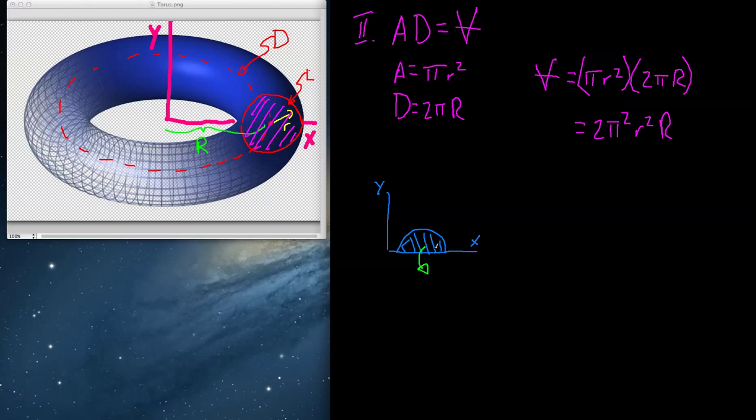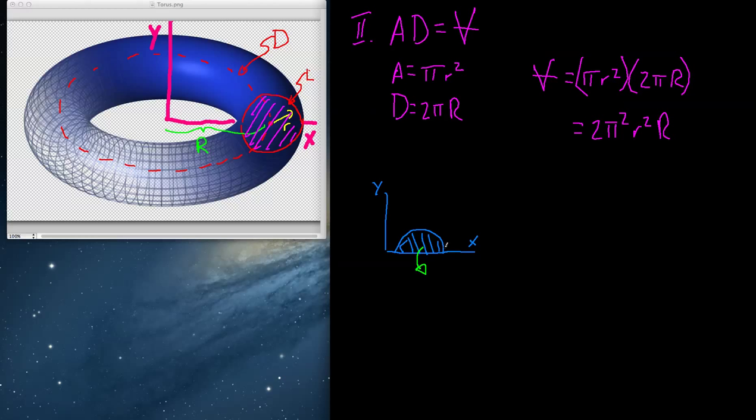And using the theorems of Pappus-Guldinus allow you to find volumes, allow you to find areas, and in our case, we're going to actually find out where is the centroid. So let's imagine, this is kind of like our game, we're going to revolve this semicircle around the x-axis. Now, we already know what the answer is.